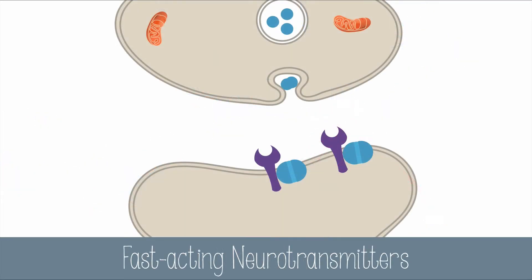The neurotransmitters we've seen so far have all been fast-acting neurotransmitters. They can get across the synapse in less than a millisecond, and as soon as they bind to a receptor, the ion-gated channels open or close in response to the neurotransmitter immediately.